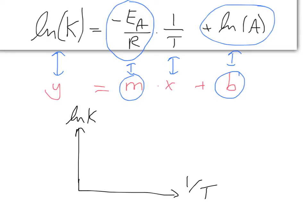The gas constant, we know, is positive, and so we know this whole term must be negative, which means that our data will slope in a downward fashion. And so, if we measure rate constants at differing temperatures, and we calculate the log of k, and the reciprocal of T, and we plot it on an x-y plot, we should have something that looks like this.